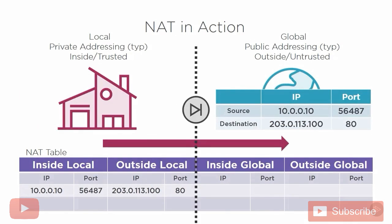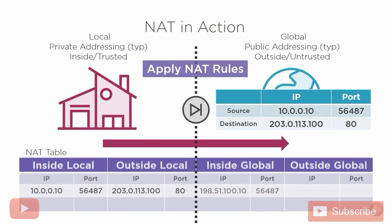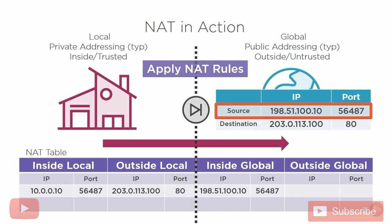Before we send the message out to the global internet, we need to change our source IP address so we can reach the public internet. We apply our NAT rules and grab the public IP address from the outside interface of our firewall — in this case 198.51.100.10 — and record that in our NAT table as our new inside global IP address. When the packet is on the global side of the network, the source IP address will be that public IP, so we change the packet header.